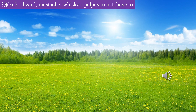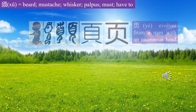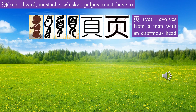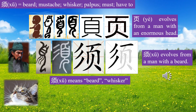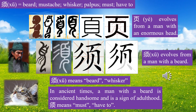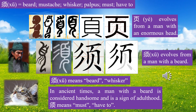Let's learn character Xu. Ye evolves from a man with a big head; Xu evolves from a man with a beard. Xu means beard or whisker. In ancient times, a man with a beard was considered handsome and a sign of adulthood. Xu also means must, have to.